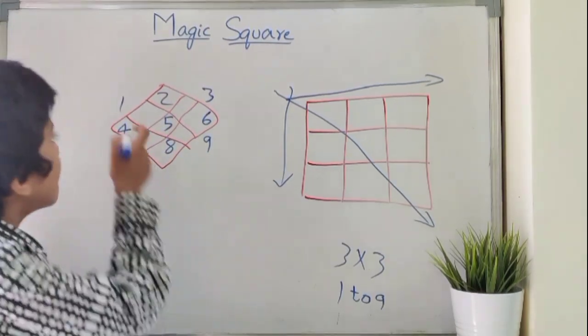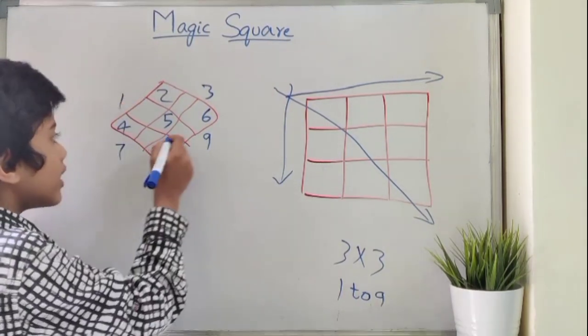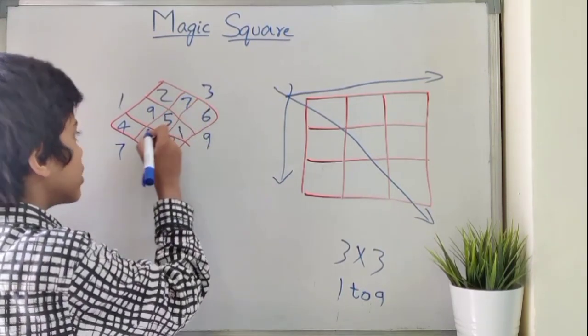Here, 1, 3, 7, 9 are outside the box. Now, we'll place 1 in the opposite box, 9 in the opposite box, similarly other numbers.